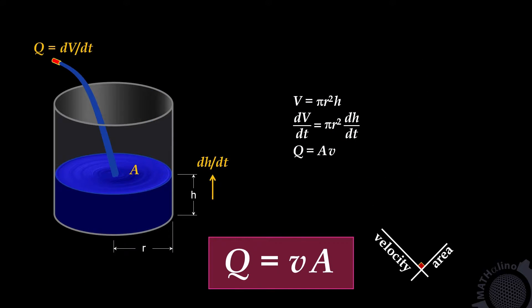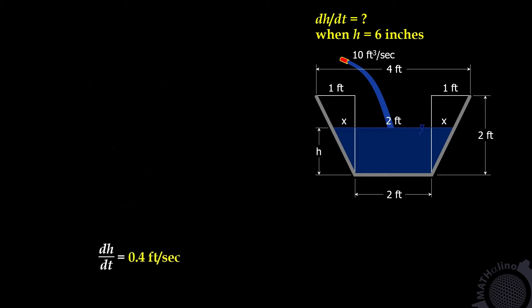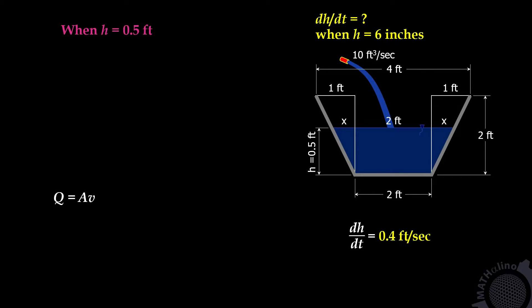Let us go back to our example. For this solution, we are going to use the formula discharge equals area times velocity. To use this formula, we go directly to the condition when h equals 6 inches or 0.5 foot. By proportion, x to 0.5 equals 1 to 2, so x equals 0.25 foot. The total width of the water surface, 2 plus 2x, equals 2.5 feet.